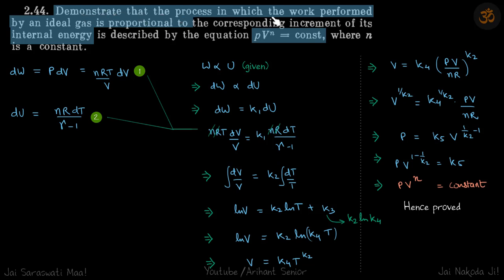We have to demonstrate that the process in which work performed by an ideal gas is proportional to internal energy. In that case, PV raised to the power N equals constant, where N is a constant. So the process the gas undergoes should be of this form if work is proportional to internal energy.